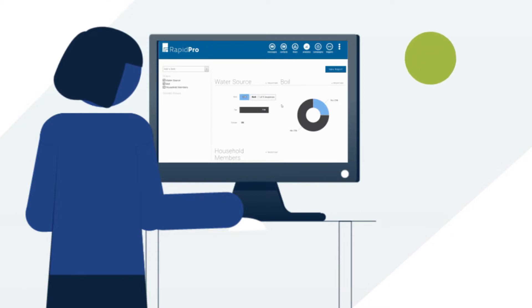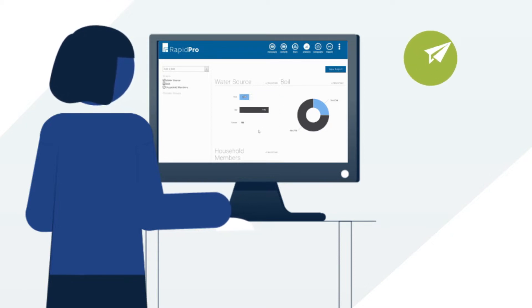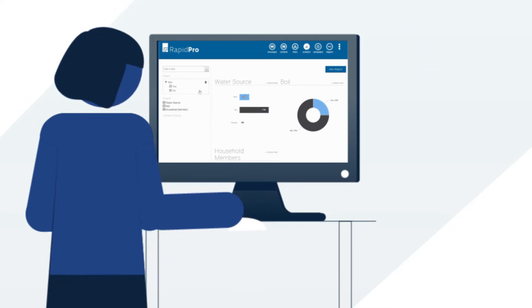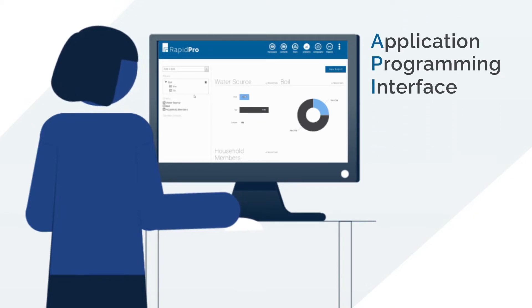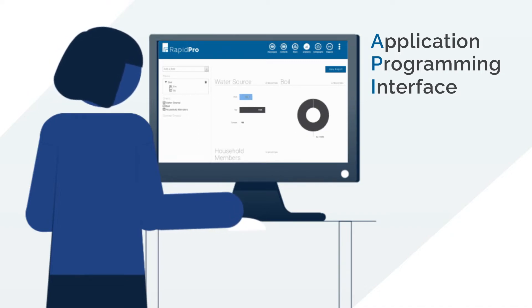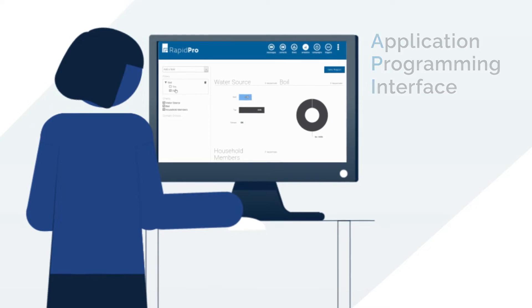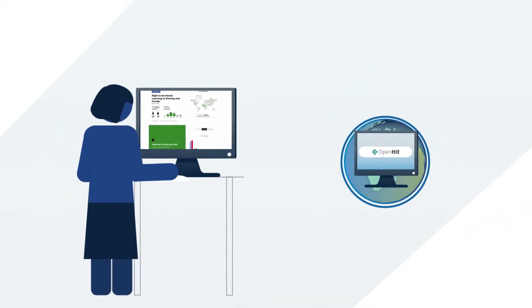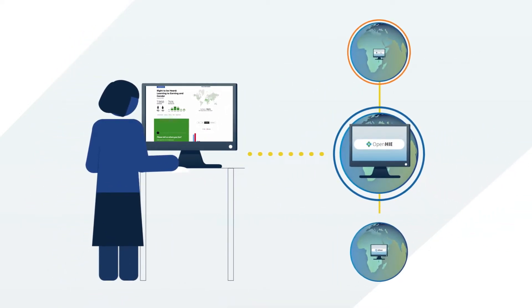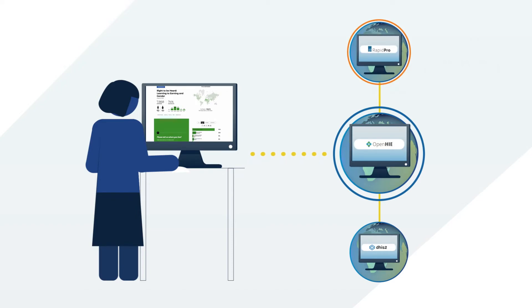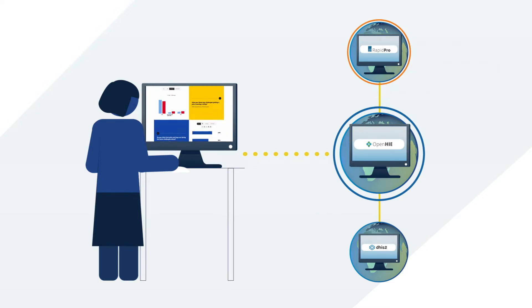RapidPro also has the ability to automate dissemination of these aggregate results to those who need them. RapidPro has an API feature that makes it easy to interoperate with other systems, enabling real-time data to inform other applications. Interoperability with other global goods such as DHIS2 presents field data automatically on dashboards, allowing national health workers to pinpoint and supply resources to areas that are in need of support.